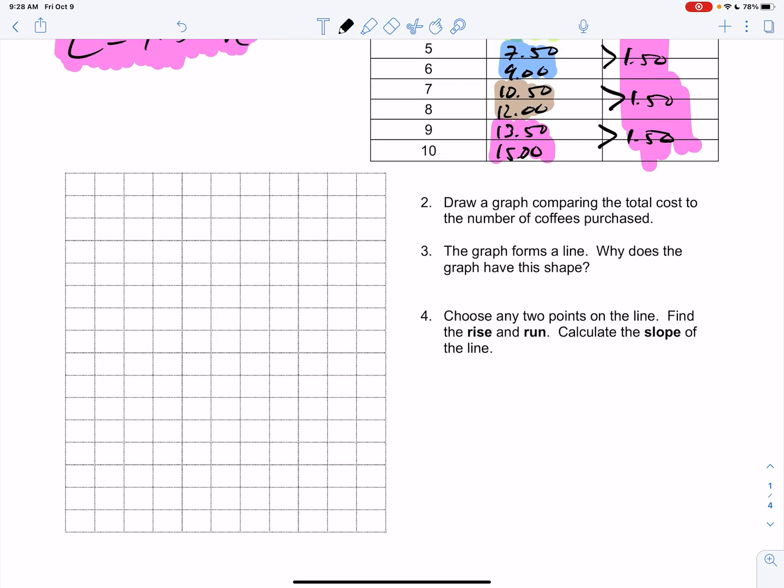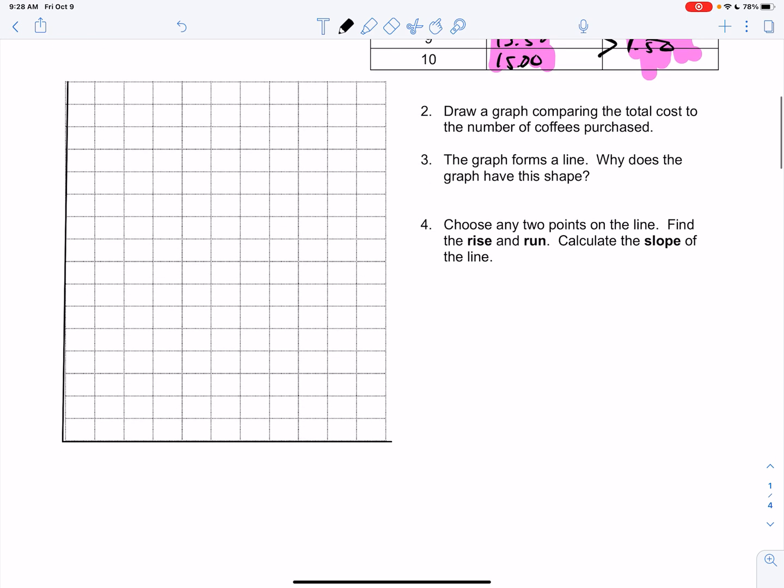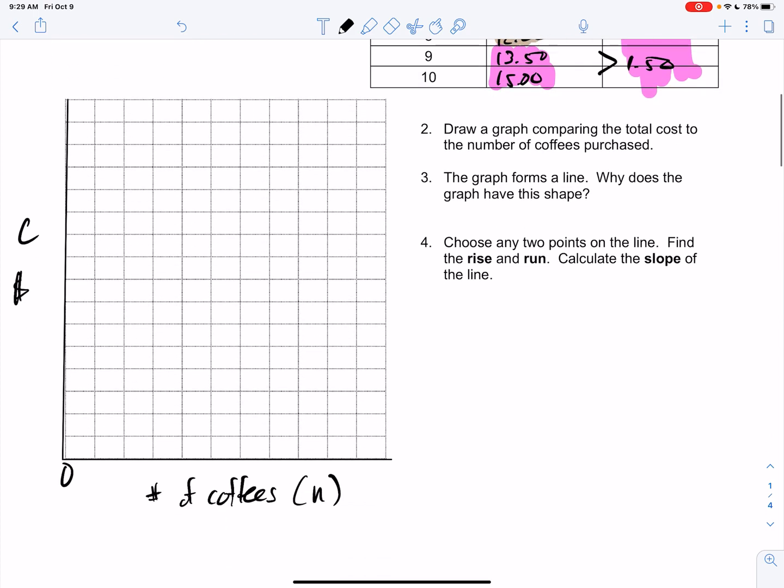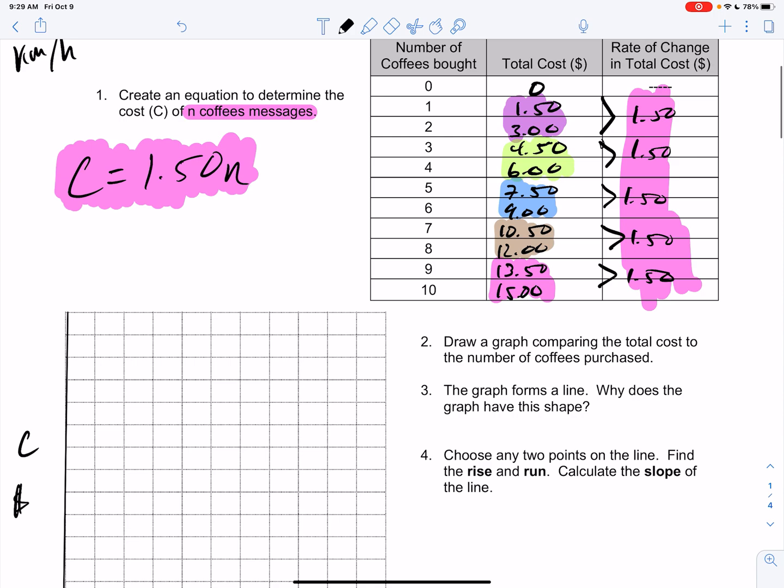It says, draw a graph comparing the total cost to number of coffees. Okay, so if we're going to draw a graph on this here, I'm going to make my axis look like this. And I'm going to explain why in a second. On the bottom here, we're going to have number of coffees, and that's going to be measured with the variable N, and C is going to be your cost that you're incurring here. Notice here, I chose to use my quadrant all positive here. This is going to be zero coffees, and then maybe we'll do one coffee, two coffees, three, four, five, six, seven, eight, nine, ten coffees.